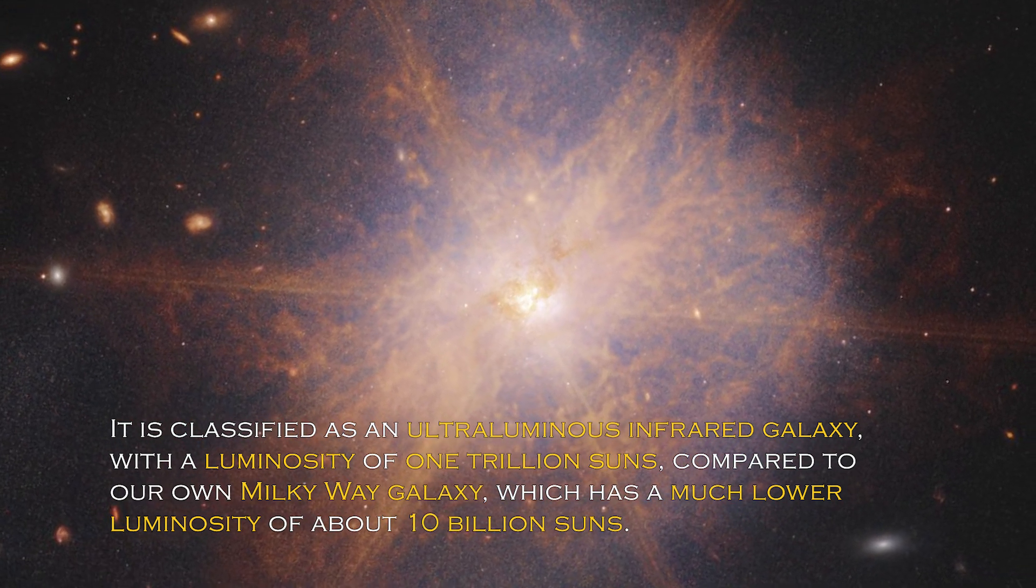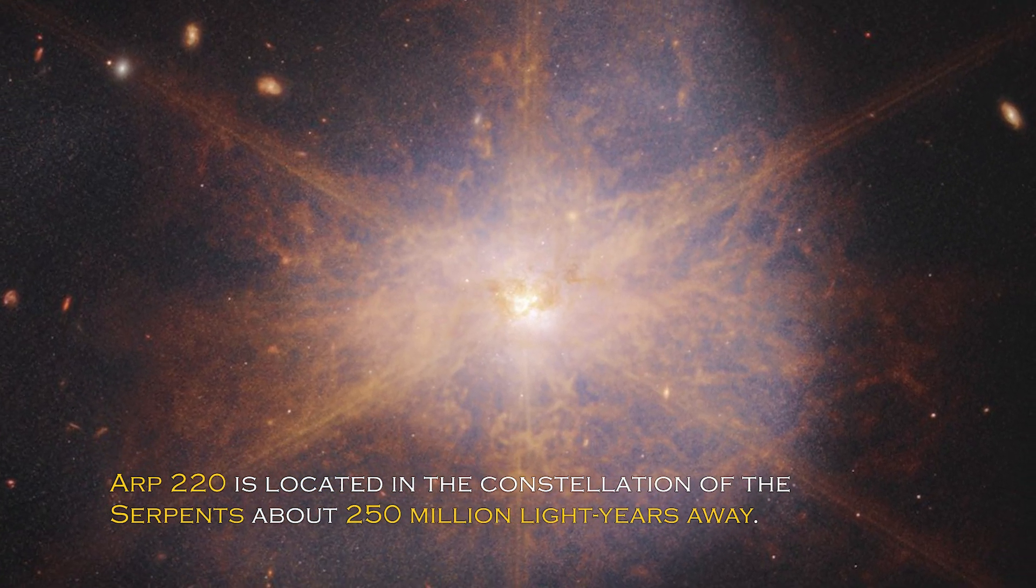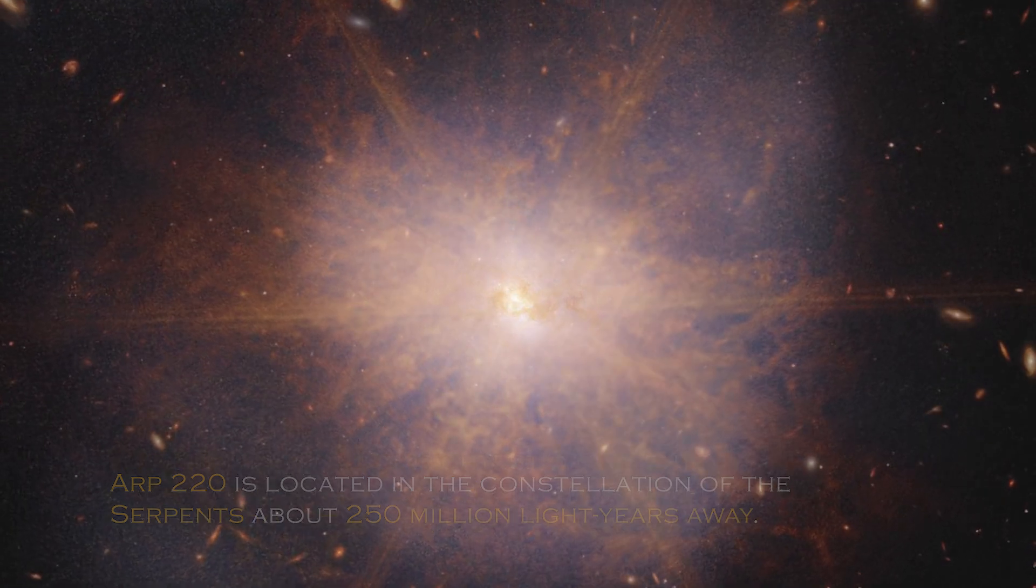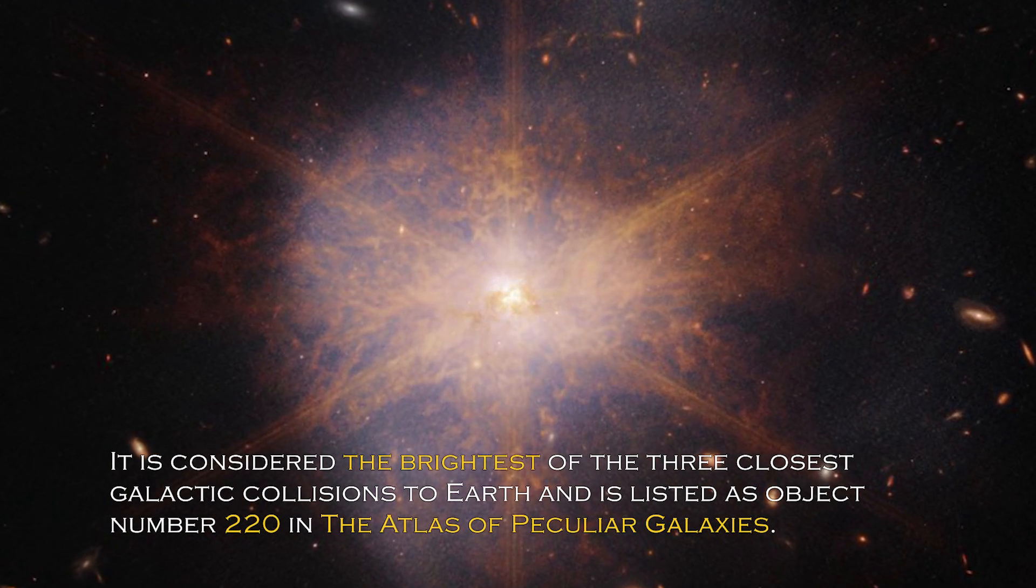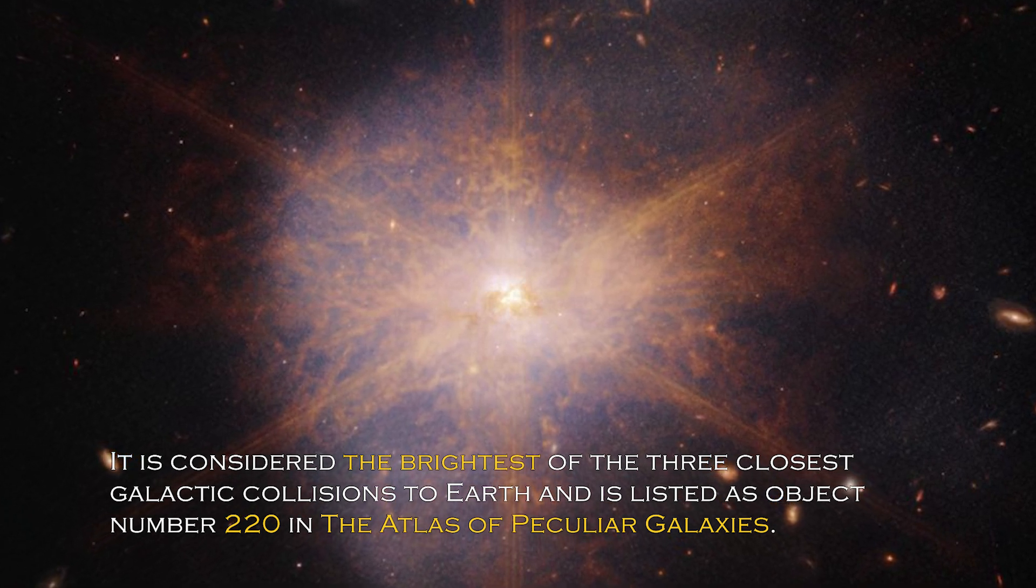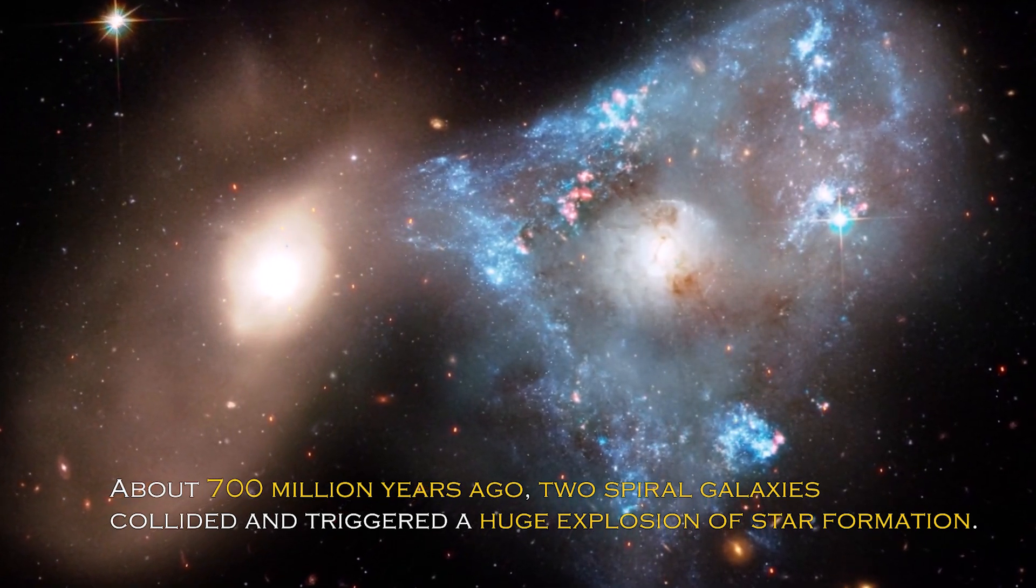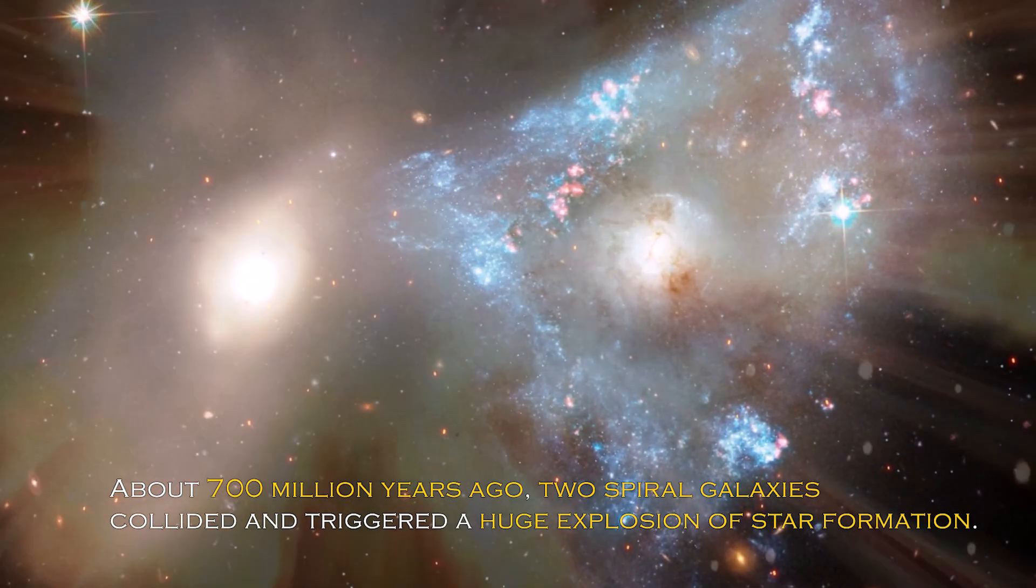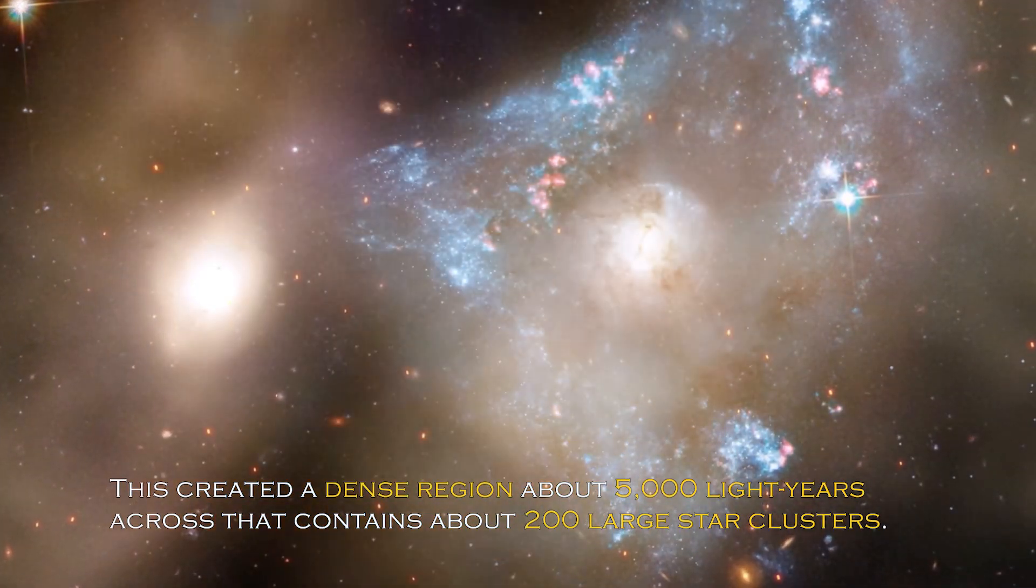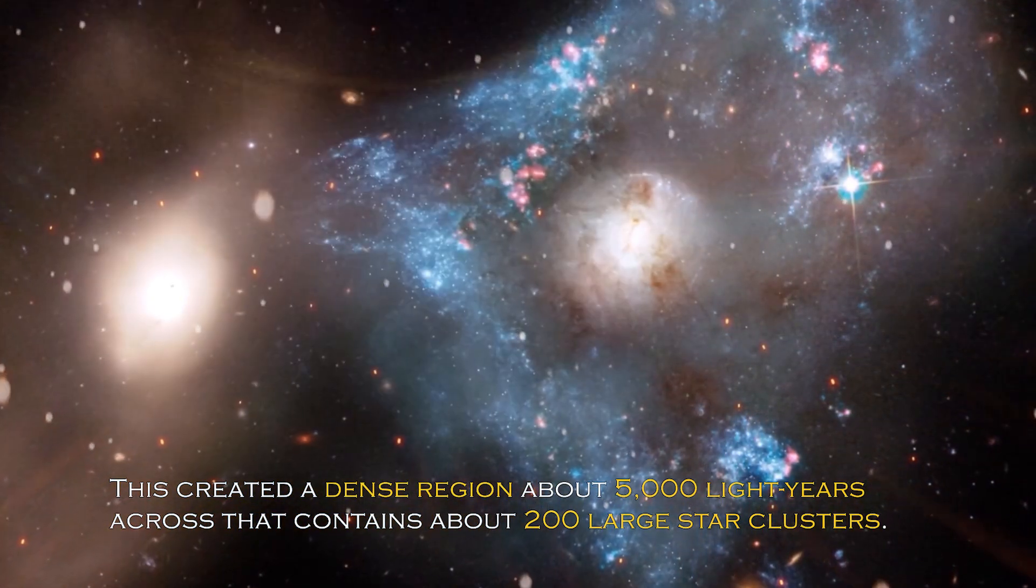ARP 220 is located in the constellation of the Serpent, about 250 million light-years away. It is considered the brightest of the three closest galactic collisions to Earth, and it is listed as object number 220 in the Atlas of Peculiar Galaxies. About 700 million years ago, two spiral galaxies collided and triggered a huge explosion of star formation. This created a dense region about 5,000 light-years across that contains about 200 large star clusters.